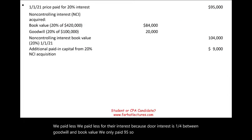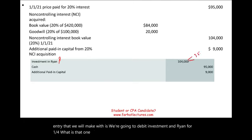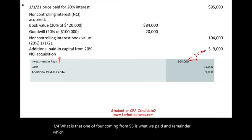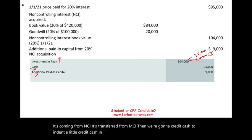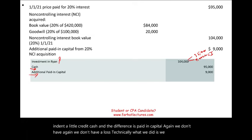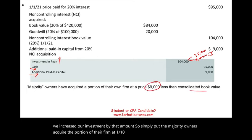Simply put, we paid less — their interest is $104,000 between goodwill and book value, and we only paid $95,000. The journal entry we will make is: debit investment in Ryan for $104,000. What is that $104,000 coming from? Well, $95,000 is what we paid, and the remainder — $9,000 — is coming from NCI, transferred from NCI. Then we credit cash, and the difference is paid-in capital. We don't have a gain or a loss. We reduced NCI and increased our investment by that amount. The majority owners acquired the portion of their firm at $9,000 less than the consolidated book value — a small bargain.